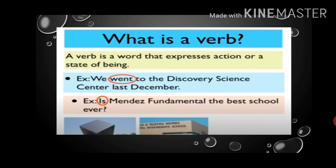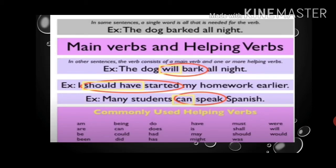For example: 'We went to the Discovery Science Center last month.' So in this sentence, what is the verb? Went — which is showing an action. 'Is the Mendez Fundamental the best school ever?' So here we are asking which is the best school, so 'is' is the verb in this sentence.